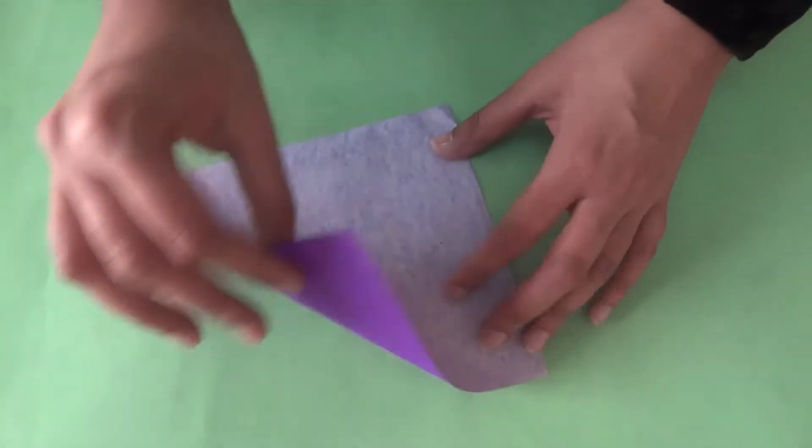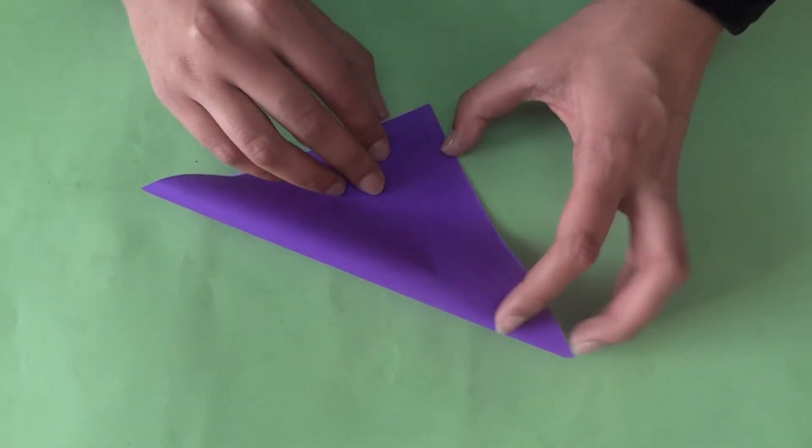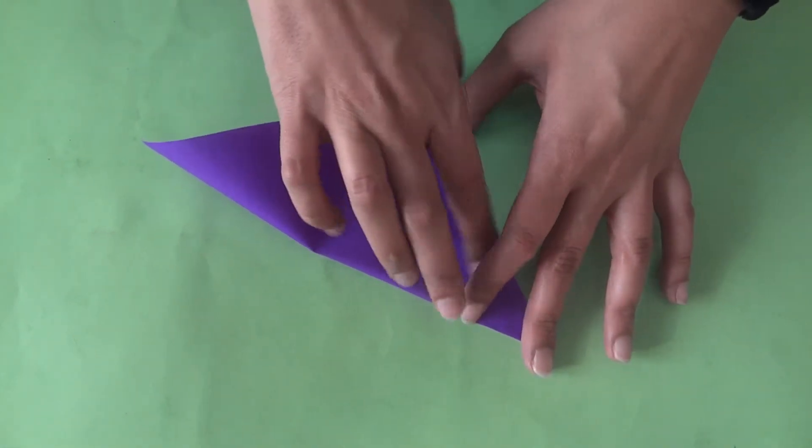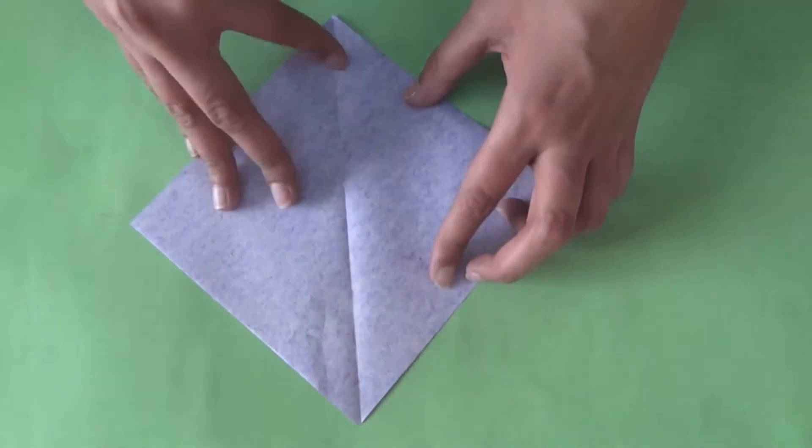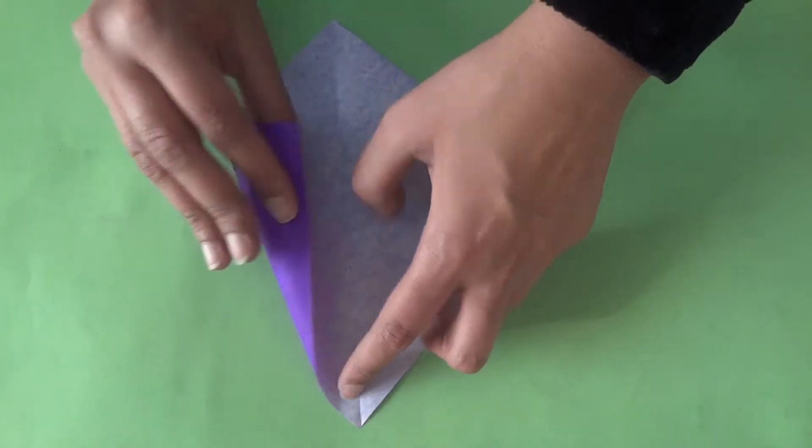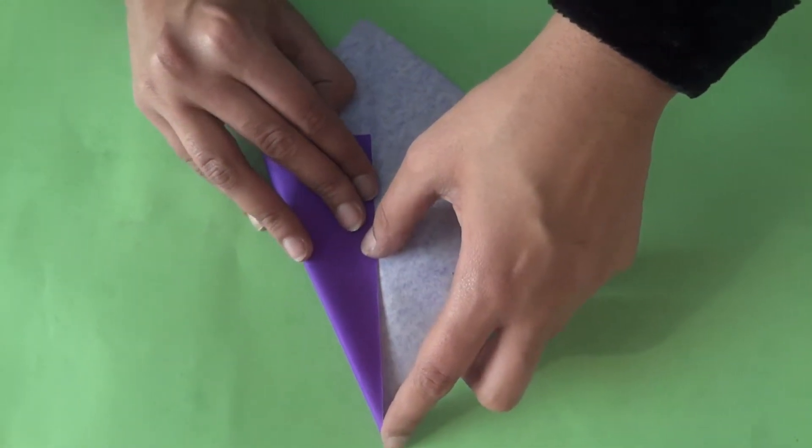Fold your paper into half diagonally and open to get the middle crease. Now you fold the edges inwards to make a cone.